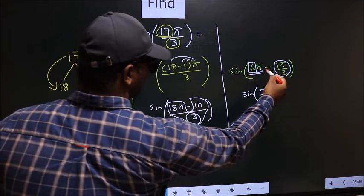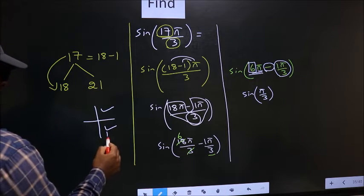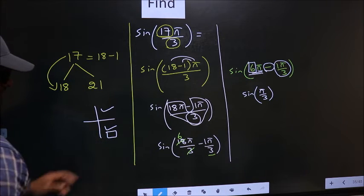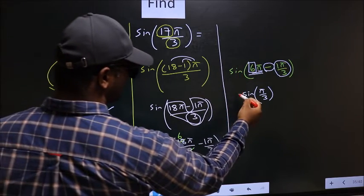we should look at this symbol. It is negative. That means the angle lies in the fourth quadrant, and in the fourth quadrant sine is negative, so put negative.